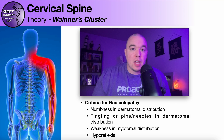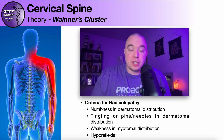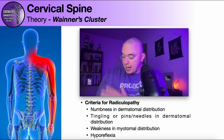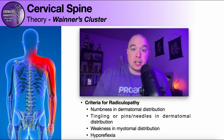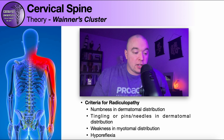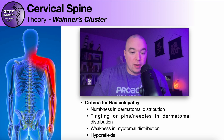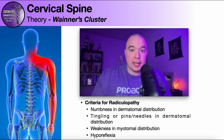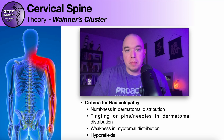Also included in the criteria are weakness in a myotomal distribution and hyporeflexia — just needs to have one of these, though usually it'll be more than one. Interestingly, you do not see on the criteria what most people think of with radiculopathy: shooting pain radiating down the affected extremity. You can have numbness, tingling, pins and needles, weakness, and disturbed reflexes all in the same nerve root distribution and not have shooting pain — and it's still a radiculopathy, treated as a radiculopathy.